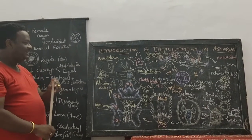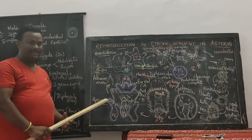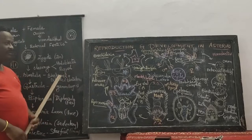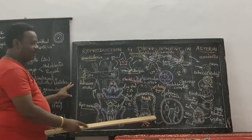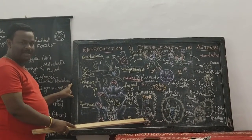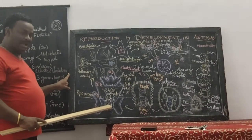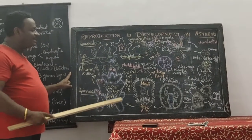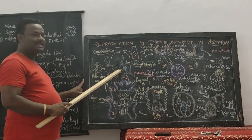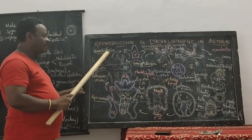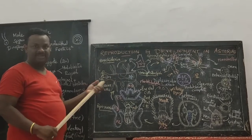We will be understanding the larval state of bipinnaria. We know that after gastrulation, you have the first larval stage called dipinnaria, and the next larval stage is called bipinnaria. The bipinnaria now starts entering into the stage of brachiolaria after a period of five to seven weeks of time.